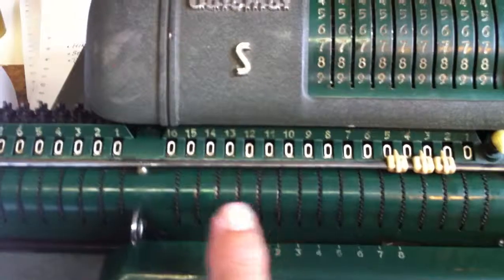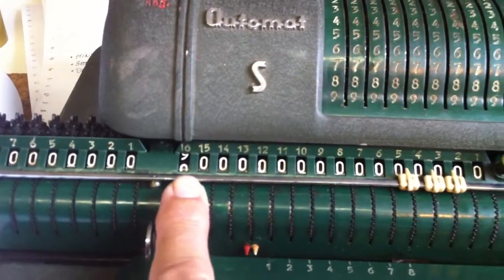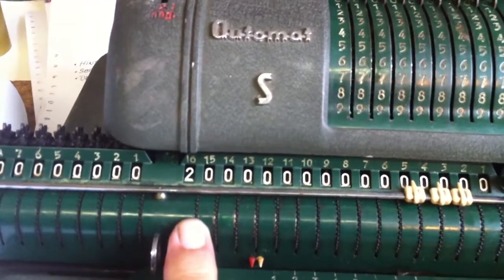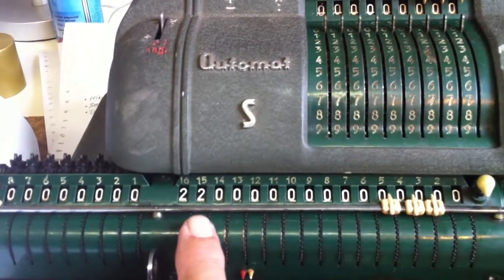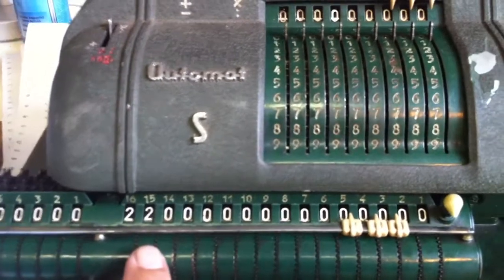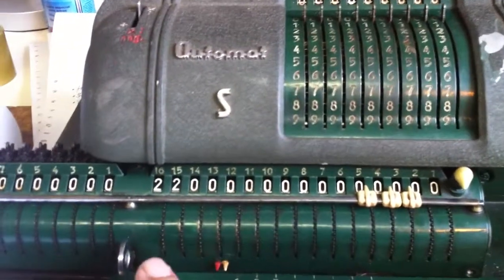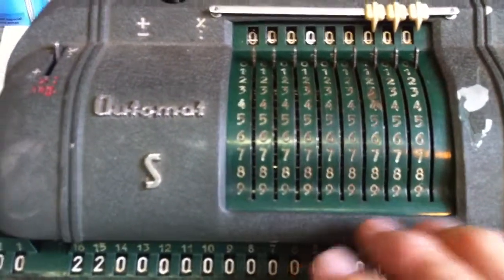We have to enter the first number on the arithmetic unit. So this is 22. The carriage is on the left position, that's the starting position.